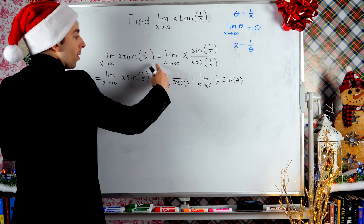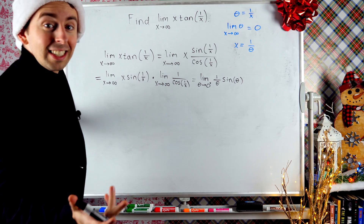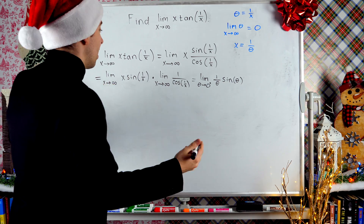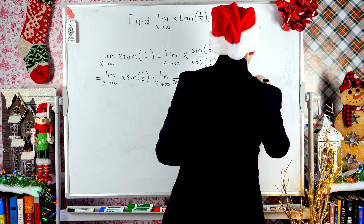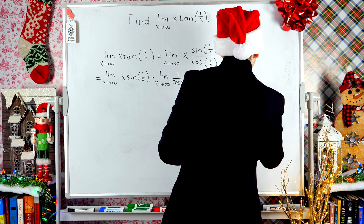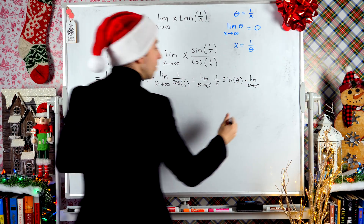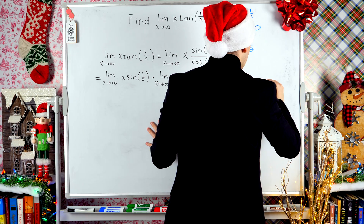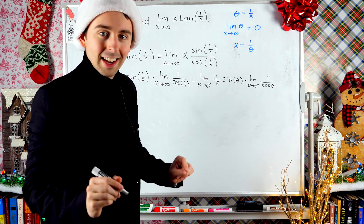For this second limit, we don't really need to re-express it with theta, but let's do it anyway. So this is times the limit as theta approaches 0 from the right of 1 over cosine of 1 over x, which is 1 over cosine of theta.